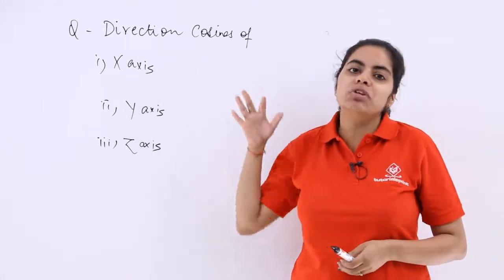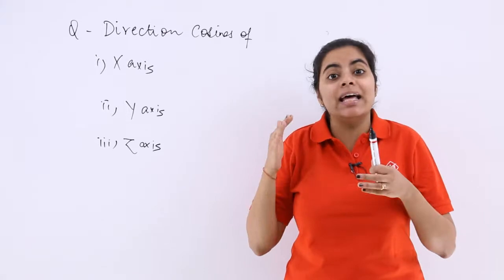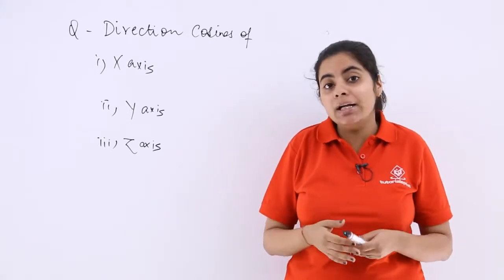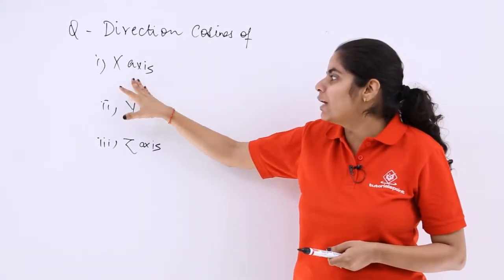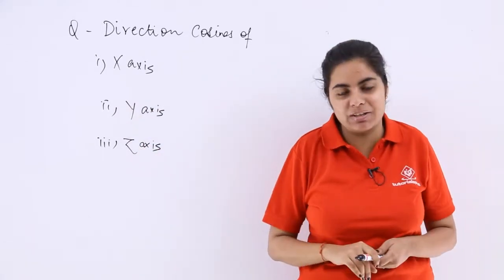So this is a question which also understands that you know the chapter, but you might forget what are the direction cosines of x, y, and z axes respectively.